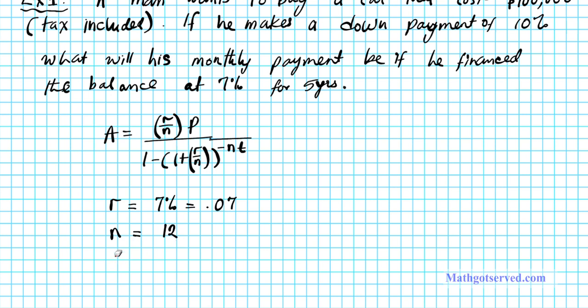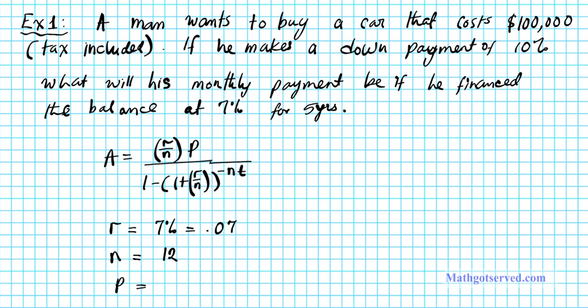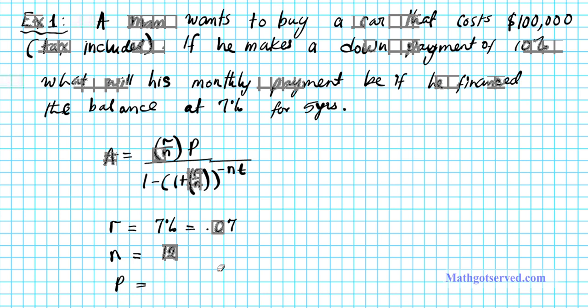P is the principal that he's taking. So what is this principal that has been financed here? Is it $100,000? The answer is no. Remember, he's putting down 10%. So we have to take the 10% out of the $100,000 to determine the principal that he's actually loaning.